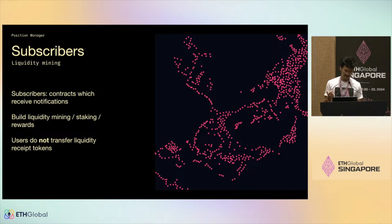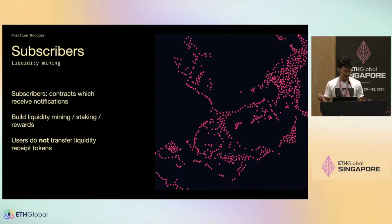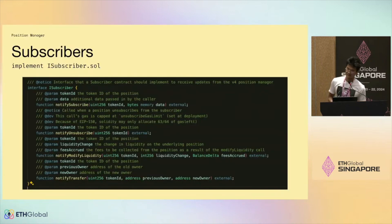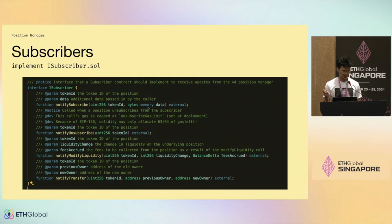Subscribers are obviously super eligible for our bounties. We at the foundation nor at labs have any intention to release a canonical version, so this is going to be community-driven. You define and deploy this contract, implement the functions that get called every time somebody's position does something. Really the notify-modify-liquidity function is where you'll do most of your bookkeeping for reward distribution.